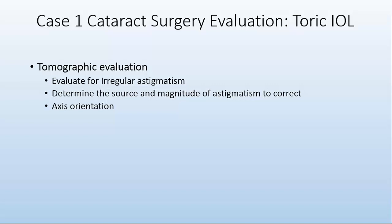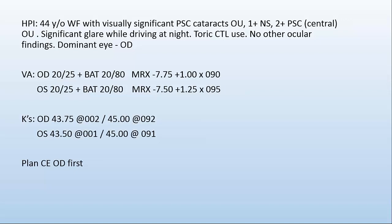When we measure a patient with subjective and objective refractions, we're measuring the total optical system — anterior cornea, posterior cornea, and the lens. Since the cataract is being removed, we need to measure just the corneal component, and older technologies only measure the anterior component. I had a 44-year-old female who came in with PSC cataracts and significant glare at night. She's a high myope with about a diopter of cyl, no other ocular findings, right-eye dominant, and had toric contact lens wear for many years.